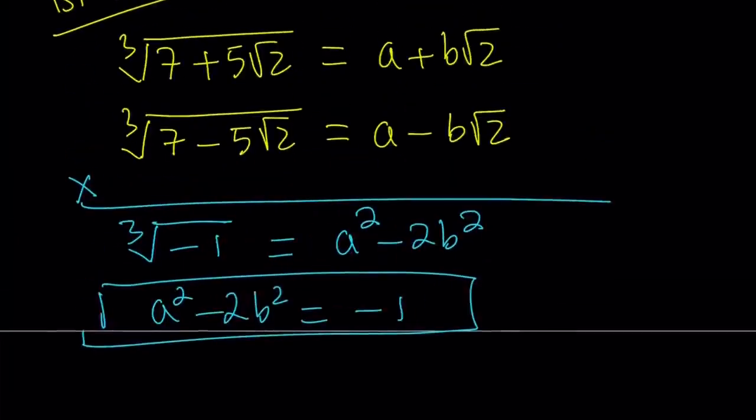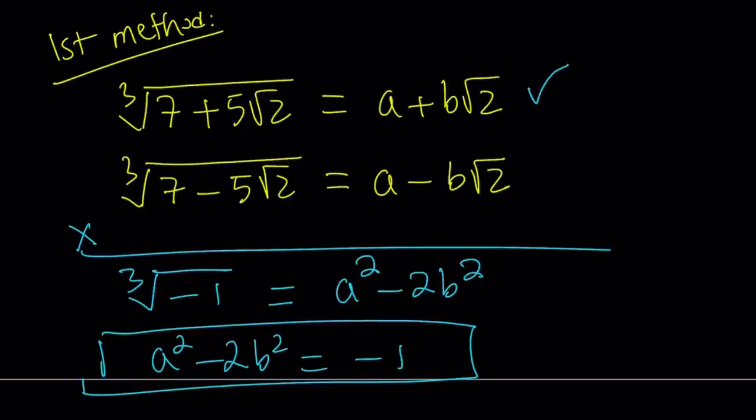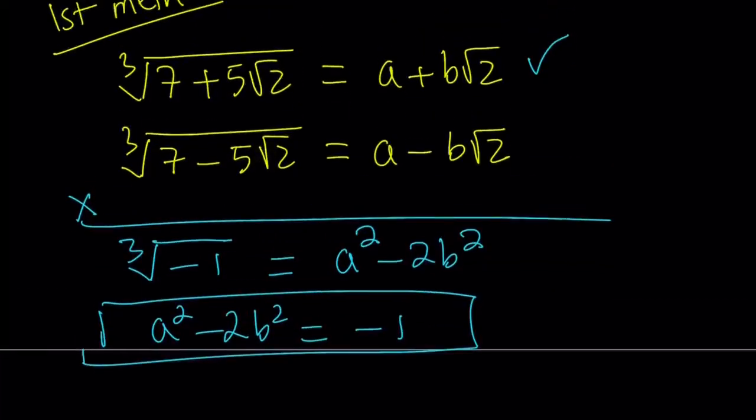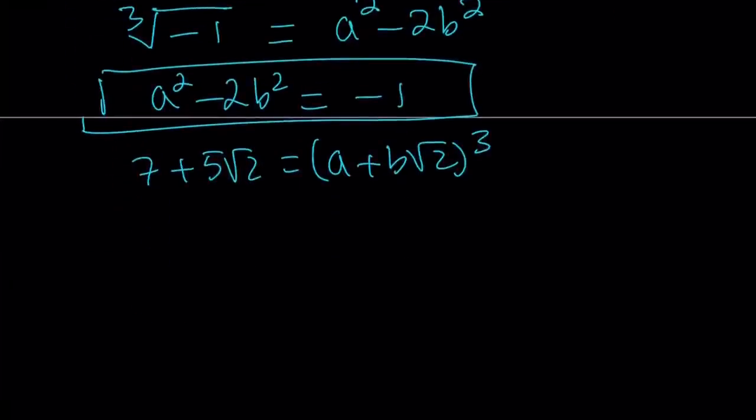And then the second equation is going to come from cubing one of these. Now there's an alternative method to the first one which I'm not going to show you because that's kind of time consuming. But if you cube both of these equations and work with that you don't have to multiply these together. You're going to be working with a cubic homogeneous system. And you can solve it by making some substitutions. So I'll cube the first one. So I'm going to cube this first equation. That's going to give me 7 plus 5 root 2 equals a plus b root 2 cubed.